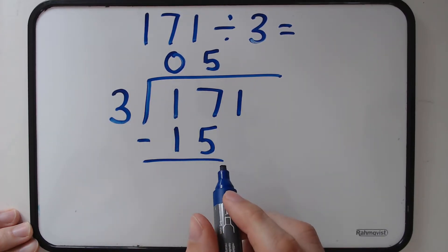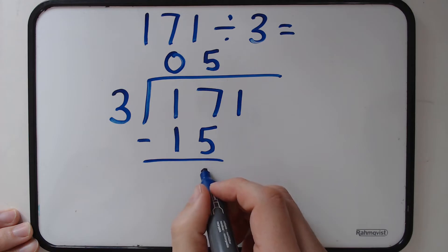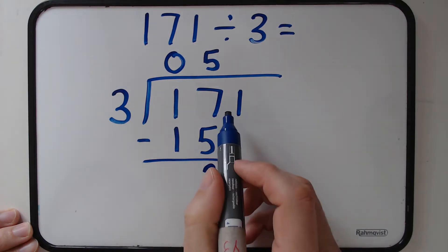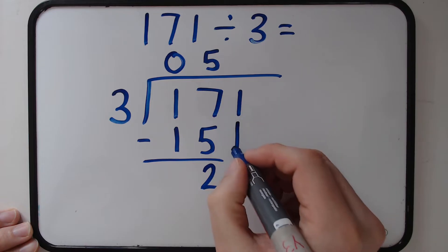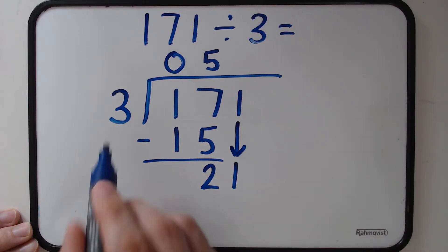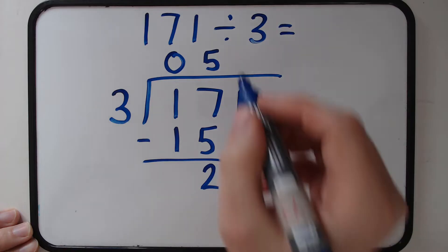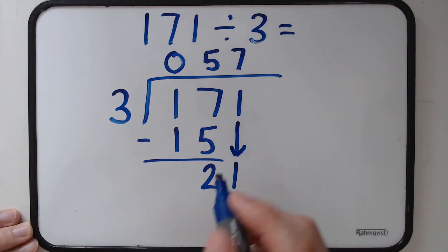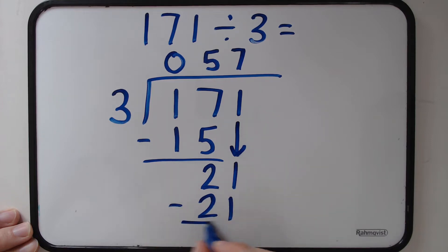In this case, 2. Next step is we've got to bring down the next number. So we've now got 21. We now need to 7 because 3 times 7 is 21. We need to take away that 21 and it will leave us with no remainder. So the answer for this one is 57.